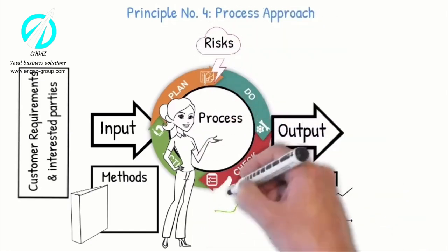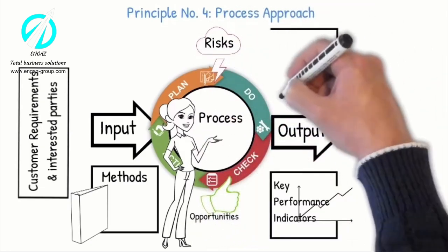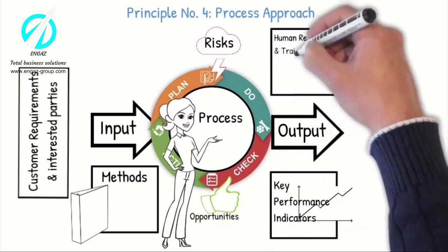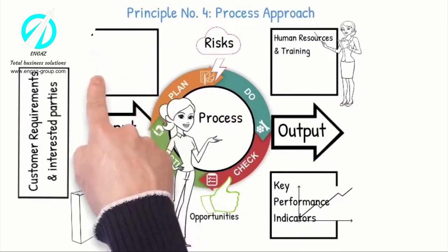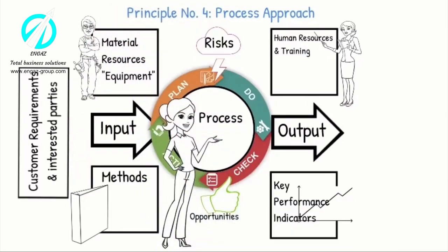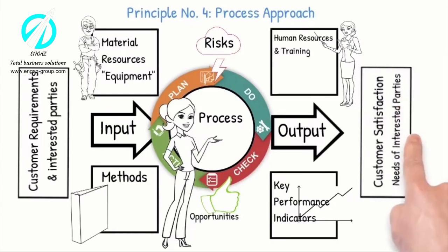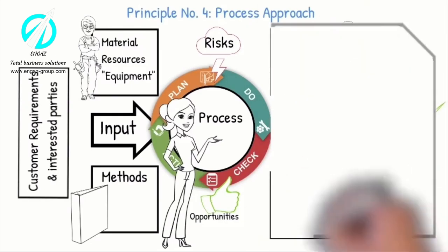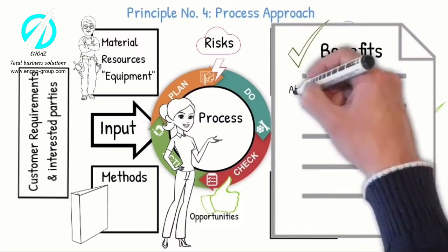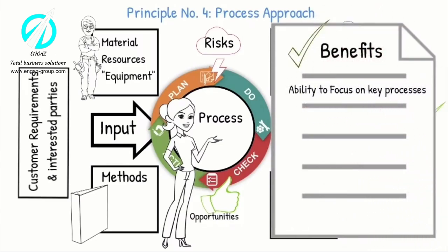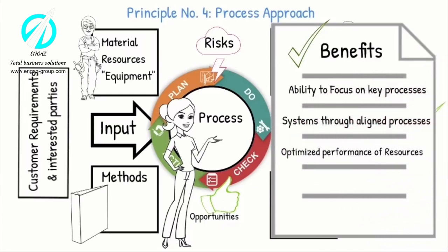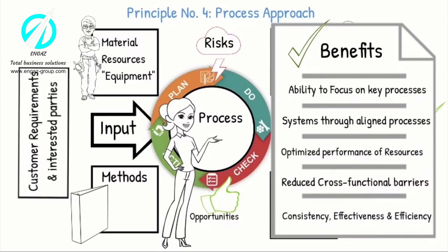By identifying the risks and opportunities, risk-based thinking enables an organization to determine the factors that could cause its processes and its quality management system to deviate from the planned results, to put in place preventive controls to minimize negative effects, and to make maximum use of opportunities as they arise to ensure that customer requirements will be achieved. The following benefits will be evident: ability to focus on key processes, systems to align processes, optimized performance of resources, reduced cross-functional barriers, and consistency, effectiveness and efficiency.